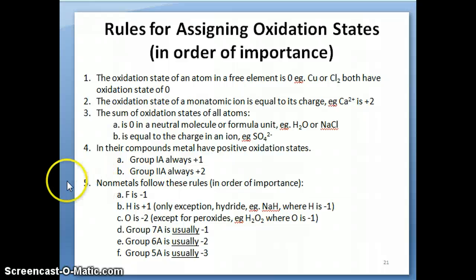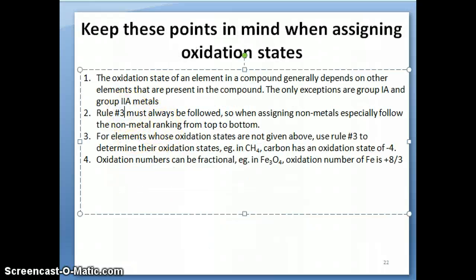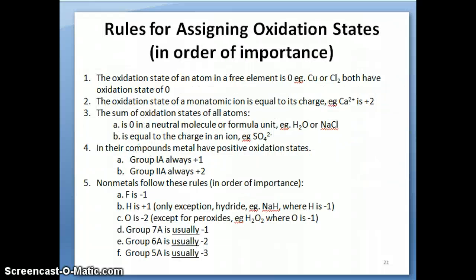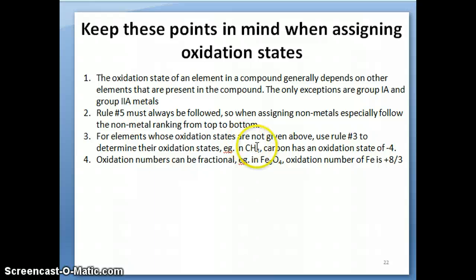Rule five — the ranking of the non-metals — must always be followed. There are certain elements not listed in the rules, and you figure their oxidation numbers by relying on the elements that are listed. An example is methane: we don't know carbon's oxidation number directly, but we know hydrogen must be plus one. With four hydrogens that's plus four total, so carbon must balance that out, giving carbon an oxidation number of negative four.